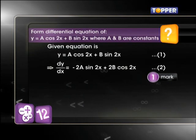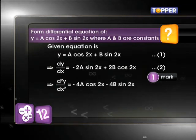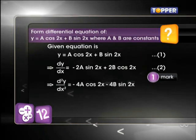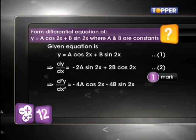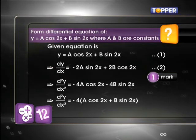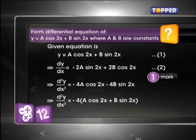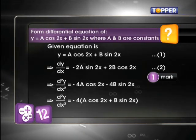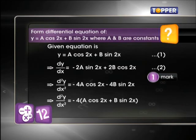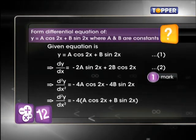This is marked as equation number 2. We differentiate equation 2 again with respect to x. This gives us d²y/dx² = -4(a cos 2x + b sin 2x).